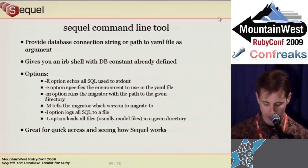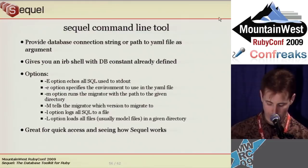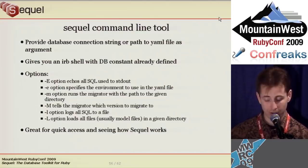Sequel comes with a command line tool. You can call it either with a connection string or a path to a YAML file as an argument. It gives you an IRB shell with a database object in DB already defined. You can also use it to run migrations with the -m switch. It's great for quick access and playing with Sequel. With the -l option, you can load all files in your model directory.